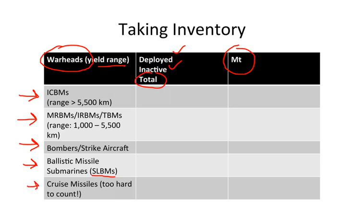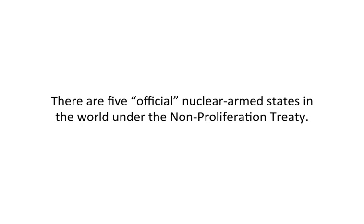Cruise missiles are really hard to count — there are so many of them, so many different variants, and it's very difficult to establish what is a nuclear-armed cruise missile versus a conventionally-armed one. So we're not going to talk too much about cruise missiles in this segment. There are five official nuclear-armed states in the world under the Non-Proliferation Treaty, and we're going to focus on those five.